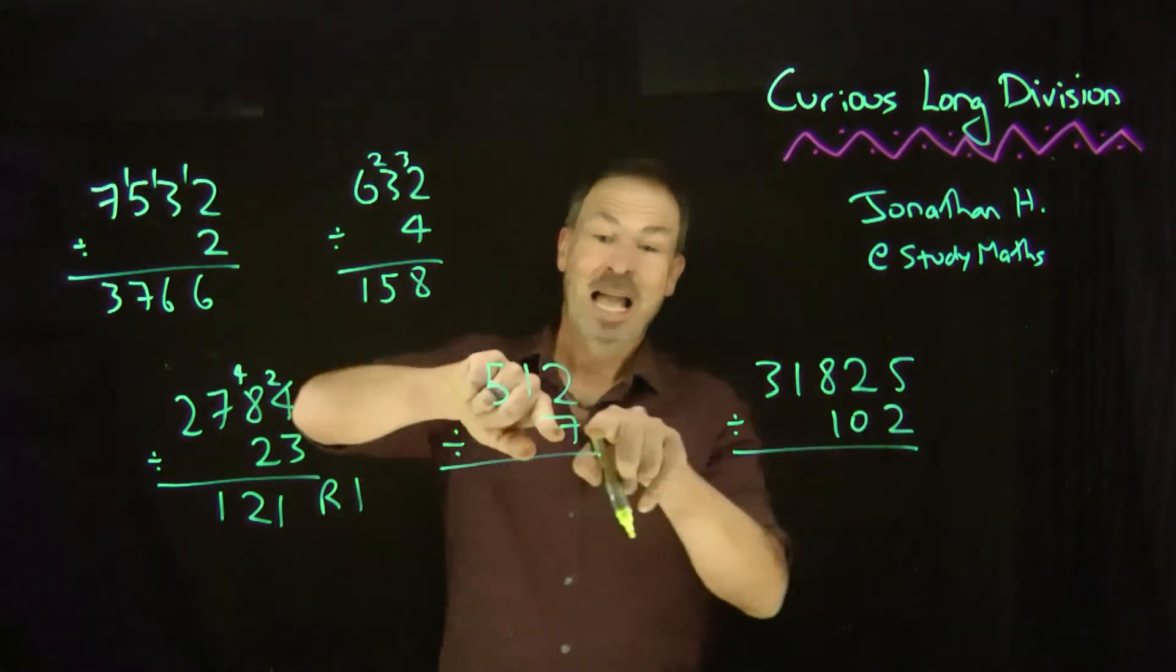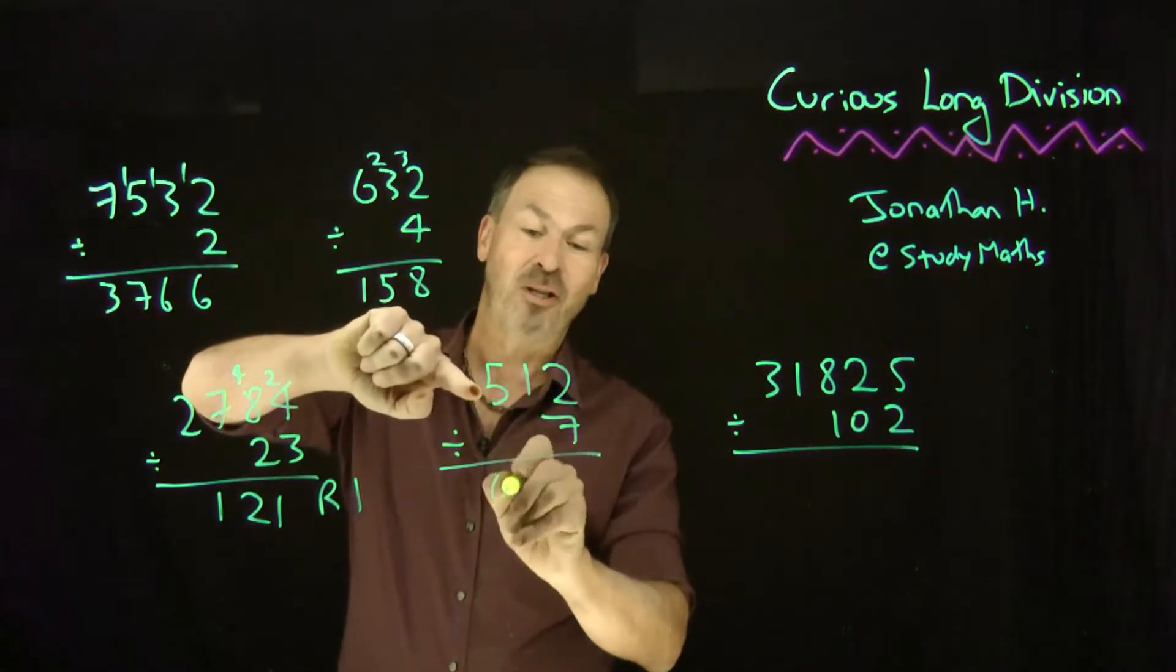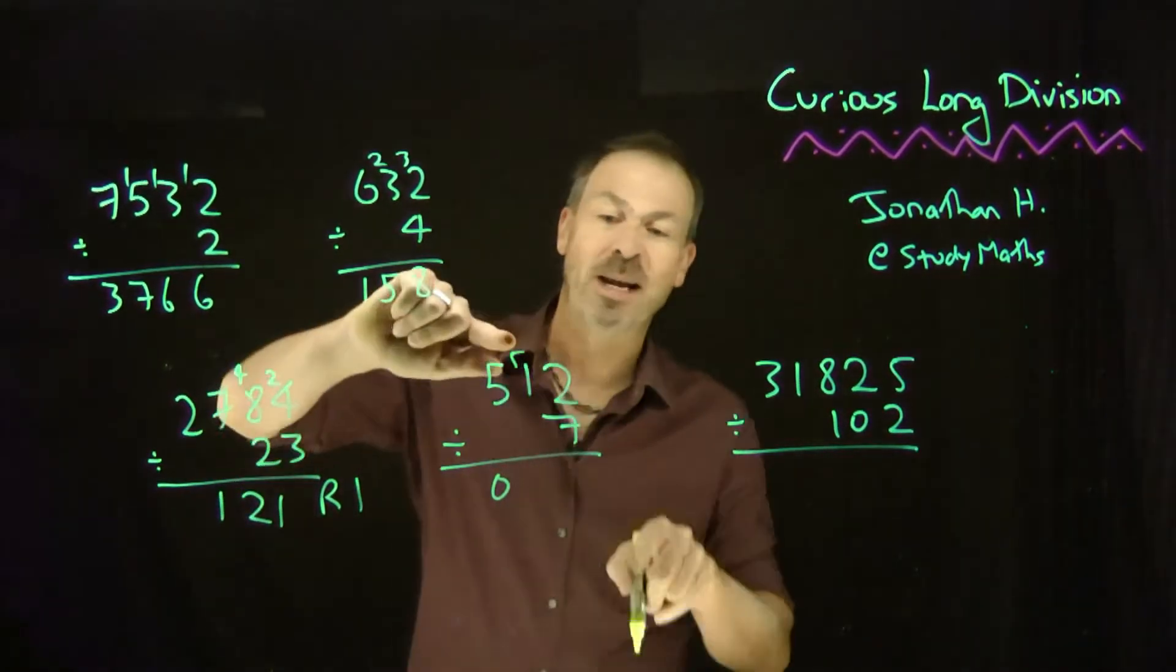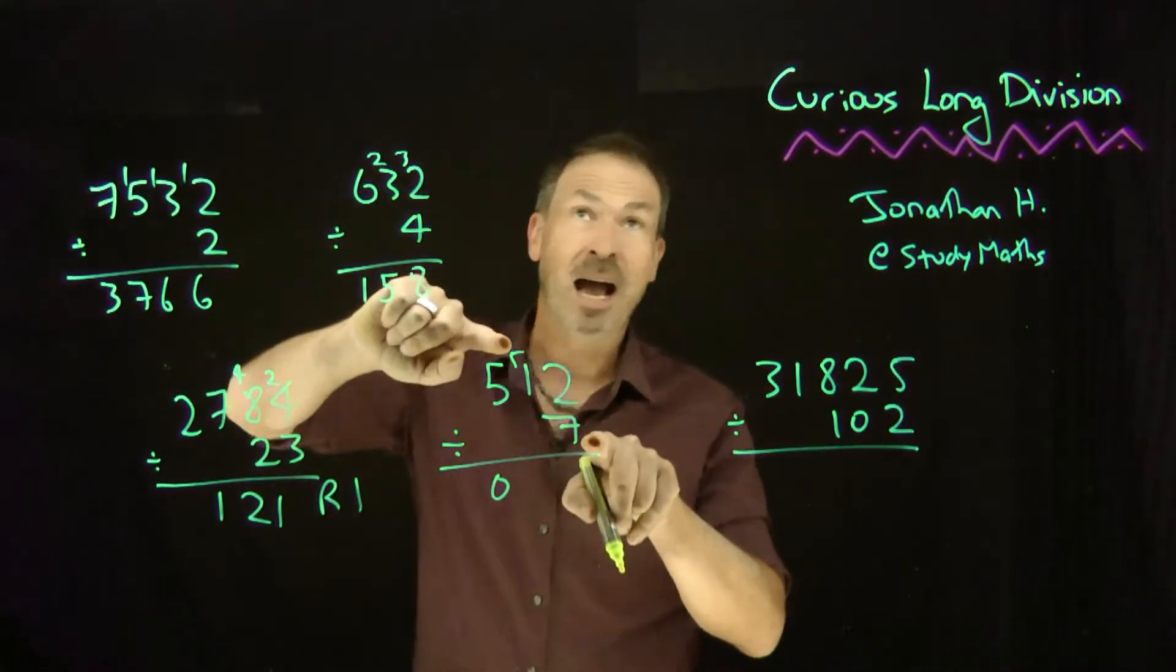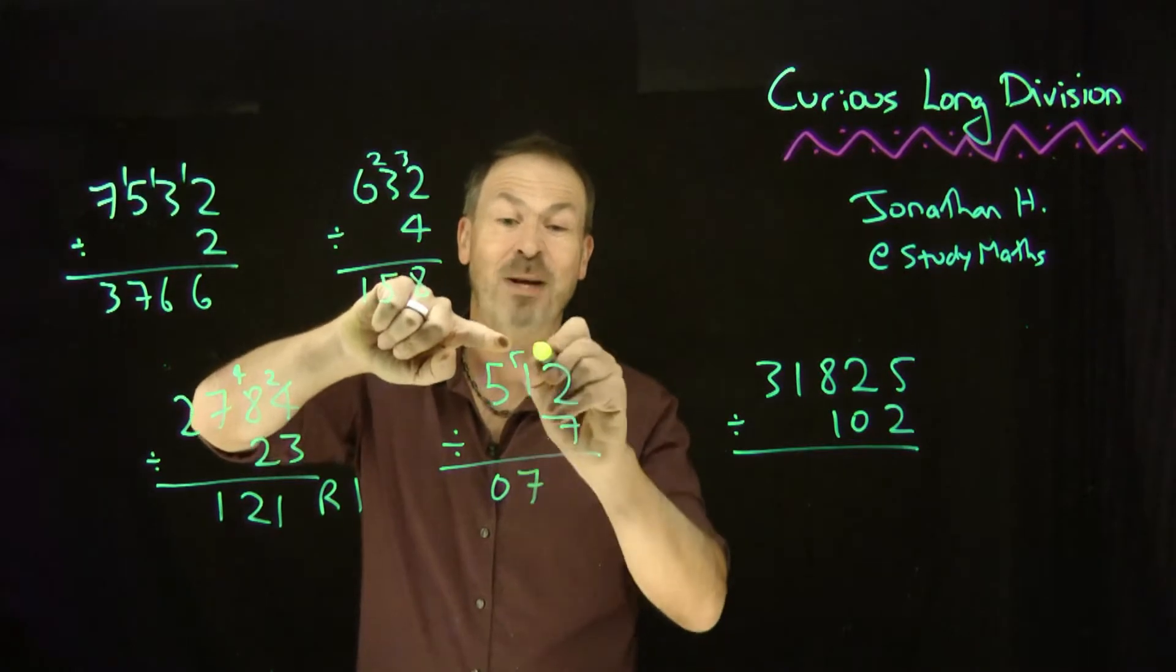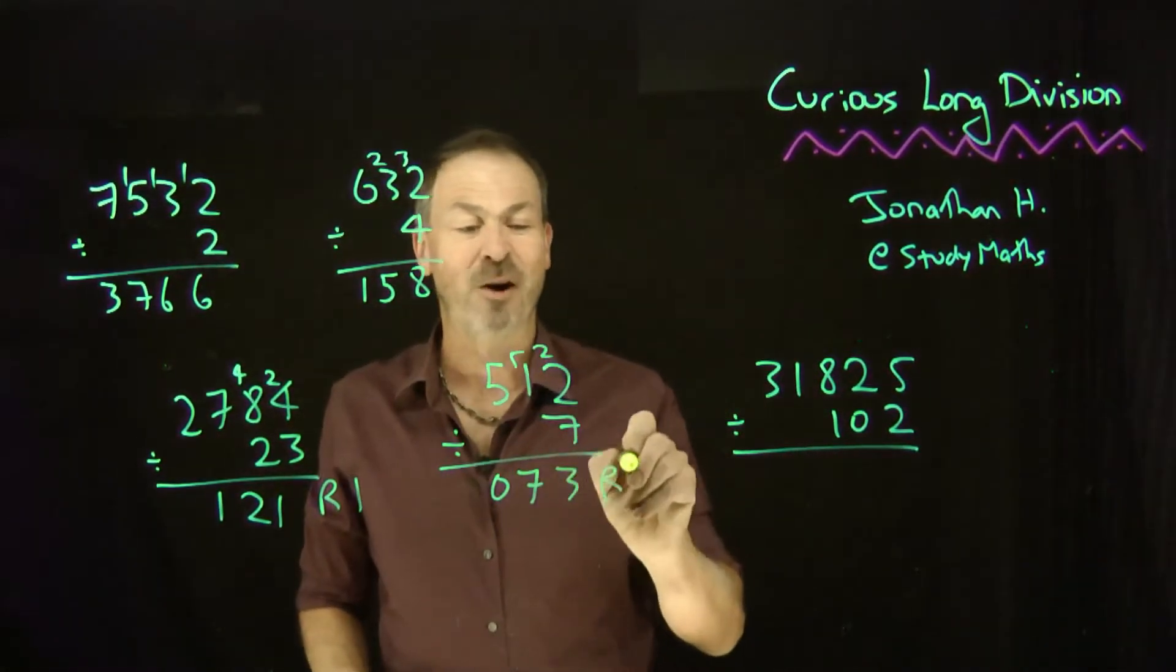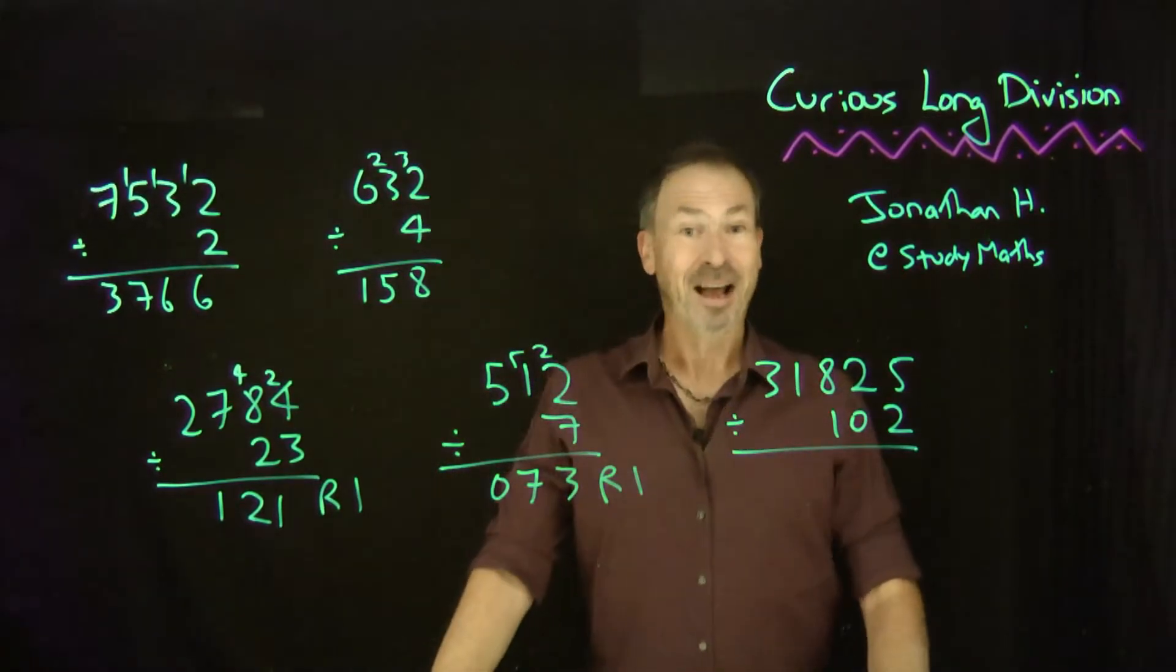To practice the remainder again, how many times does 7 go into 5? No times, so think of this as 51. No times with a remainder of 5. How many times does 7 go into 51? 49. Makes you think 7 times with a remainder of 2. How many times does 7 go into 22? It goes 3 times, meaning the overall remainder of 1. Crazy.